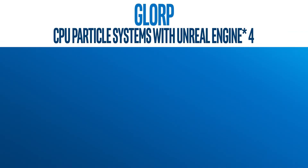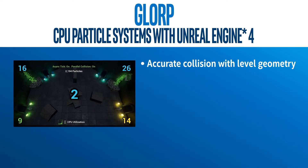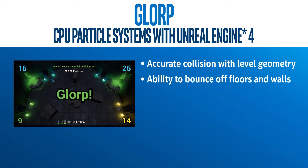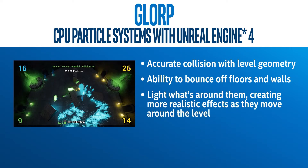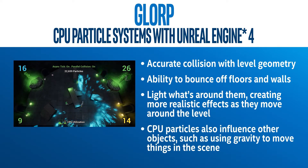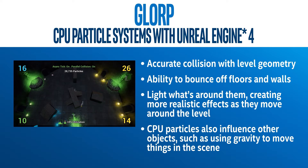CPU particles in Unreal Engine 4 have many features above and beyond GPU particles, including accurate collision with level geometry and the ability to bounce off floors and walls. They can also light what's around them, creating more realistic effects as they move around the level. CPU particles also influence other objects, such as using gravity to move things in the scene.